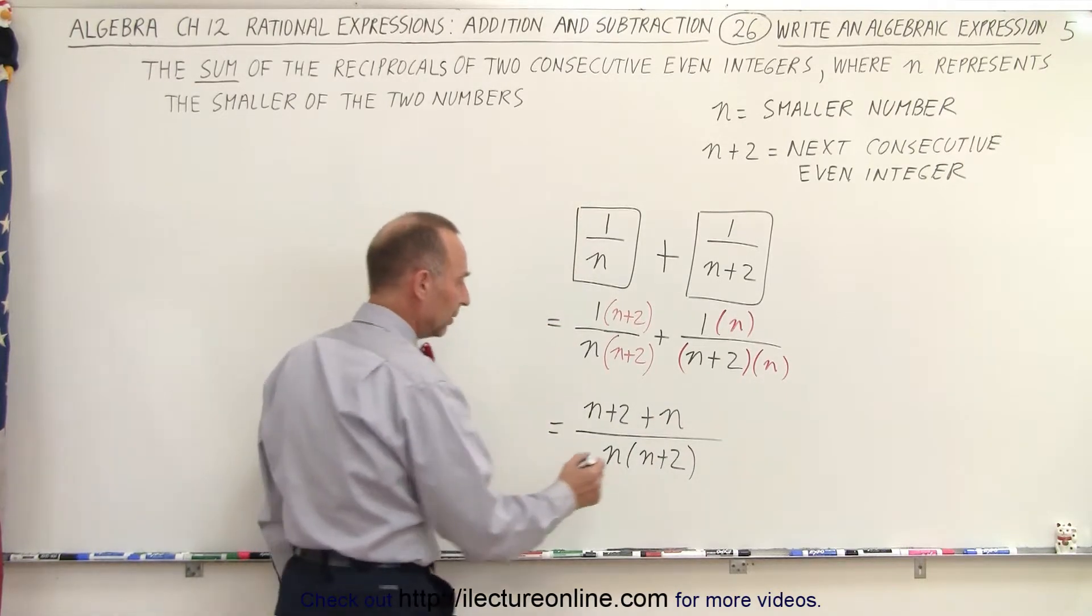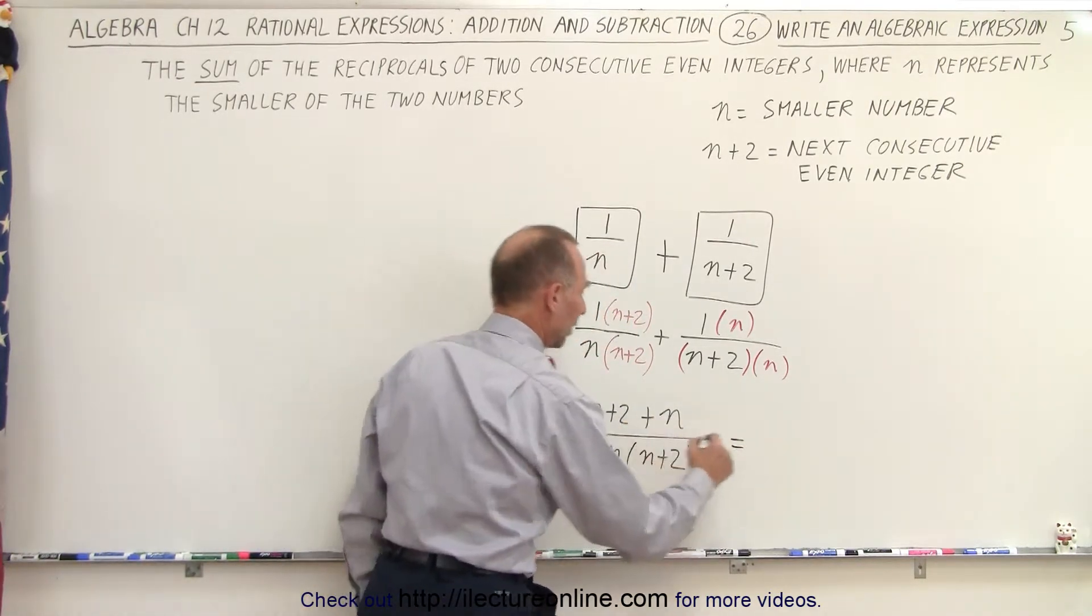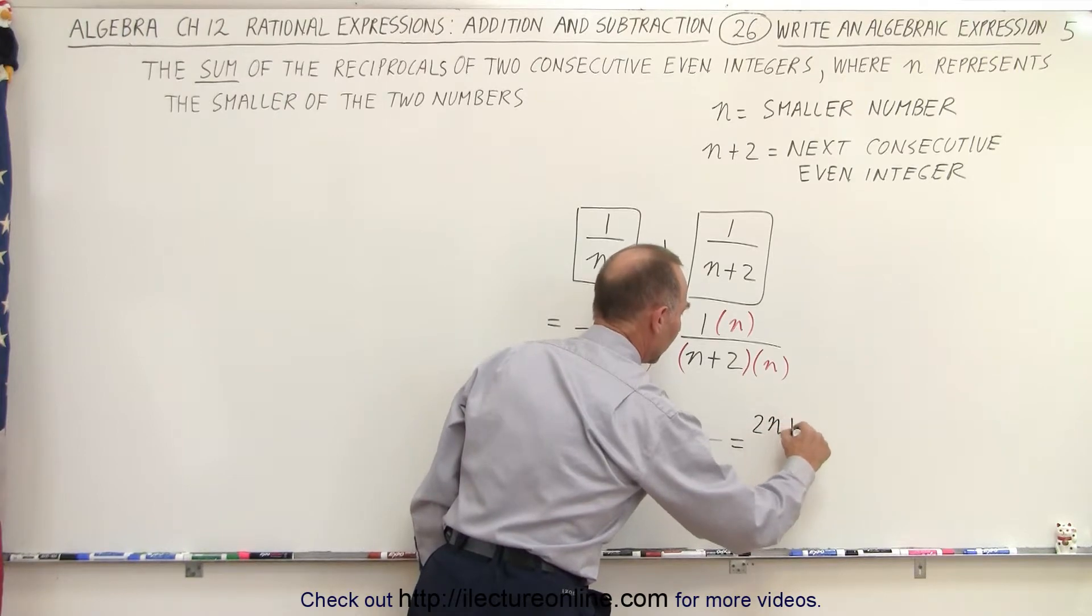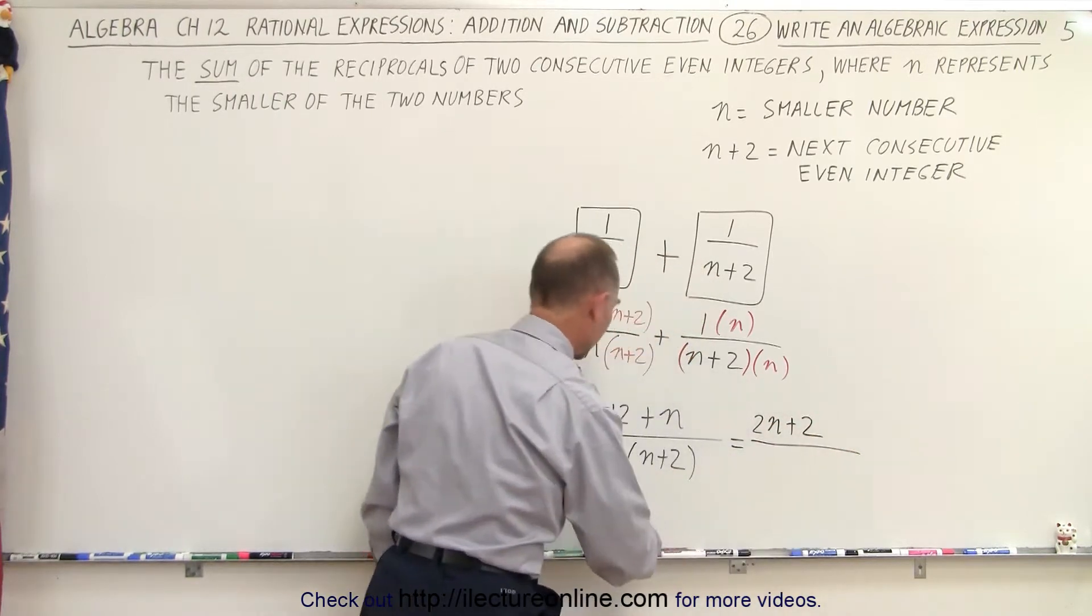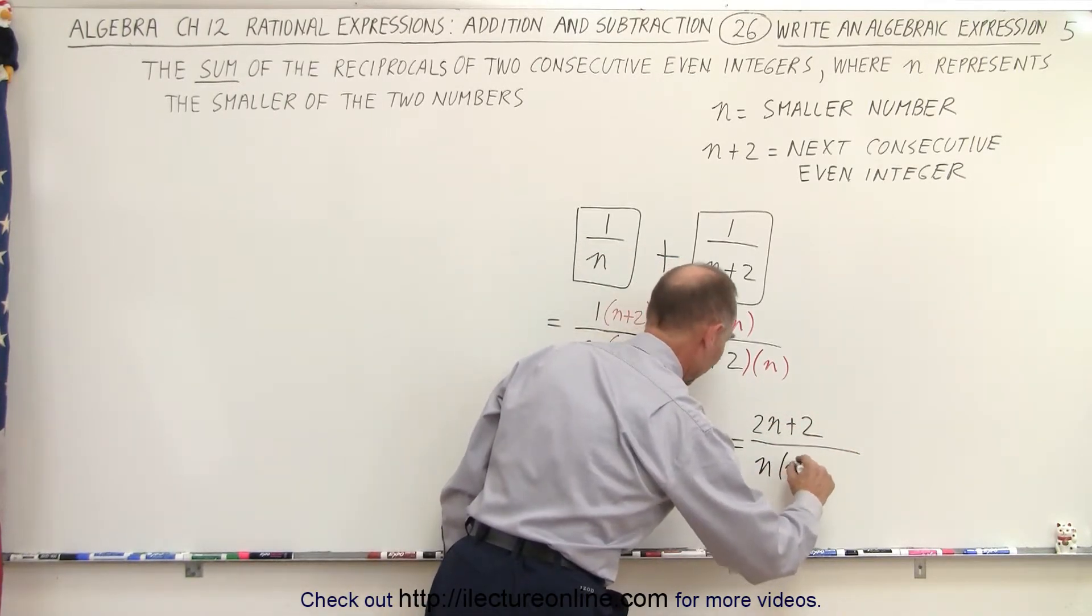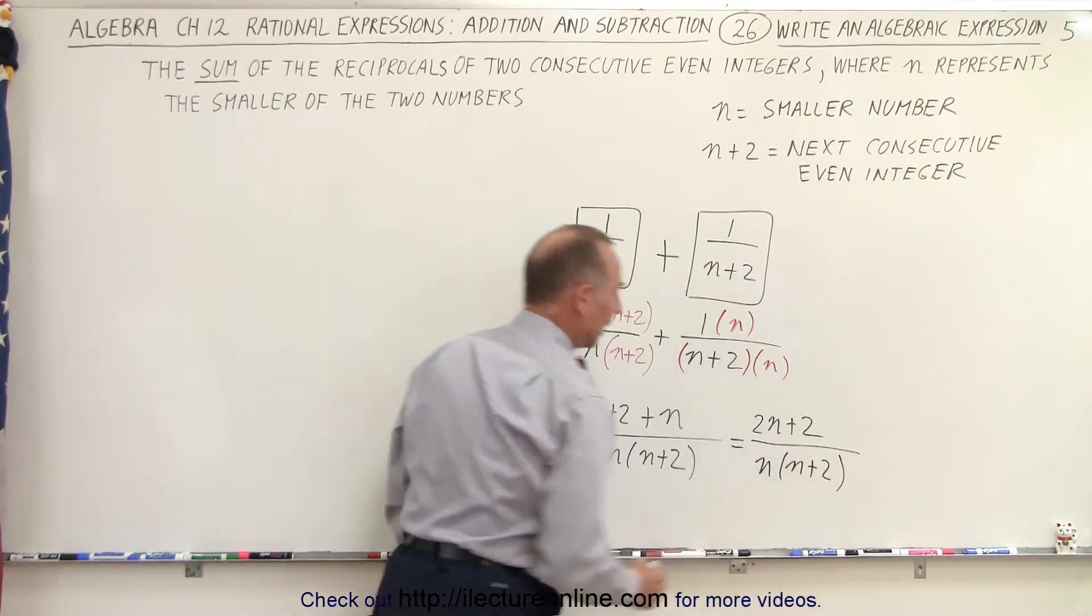And so when we add that together, this is equal to n plus n, which is 2n plus 2, divided by n times n plus 2.